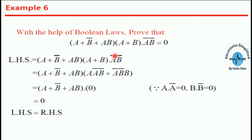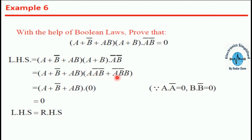One more example has three terms and requires us to prove the expression equals 0. We simplify the equation by multiplying using properties. We get a·ā = 0 and b·b̄ = 0. Substituting these terms, we get a + b̄ + ab̄ + ab·0. Since any product multiplied by 0 is 0, the Boolean equation is proved.